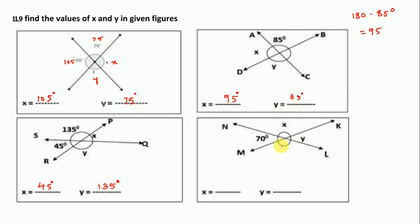Here also we follow the same method. MK is a straight line, so it is 180 degrees. We minus 70 from 180, that is 110. So x = 110. And y is vertically opposite to 70 degrees, so we write y = 70 degrees.